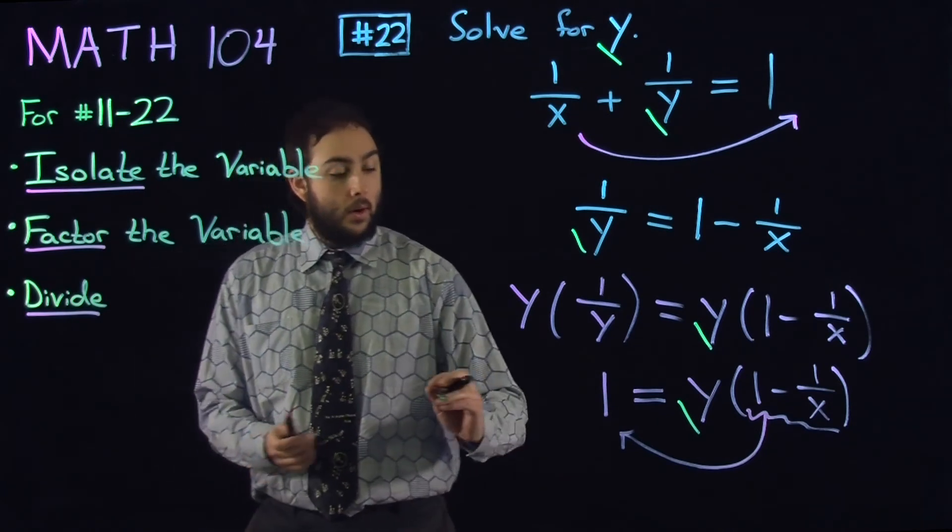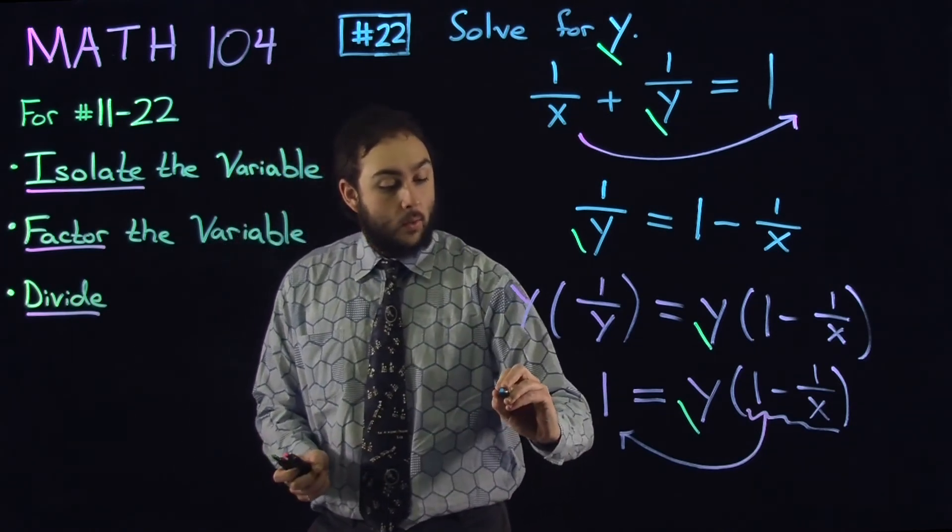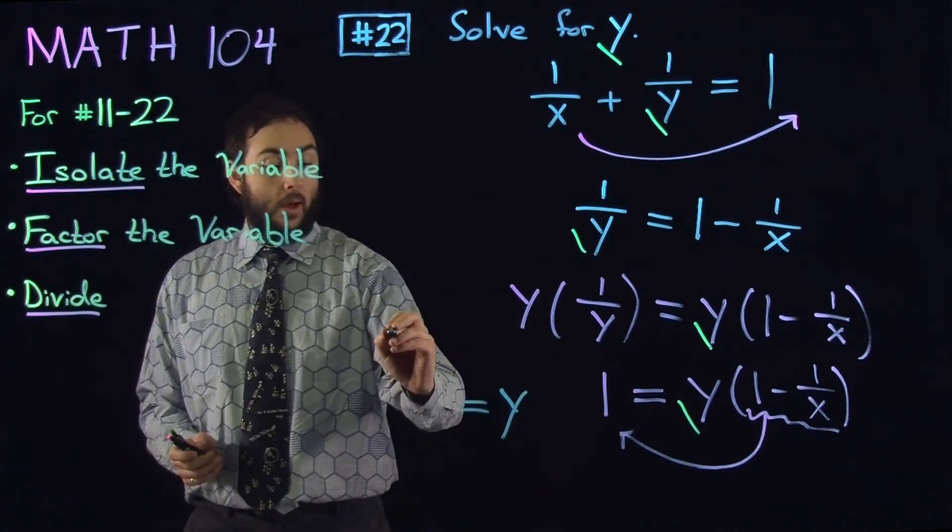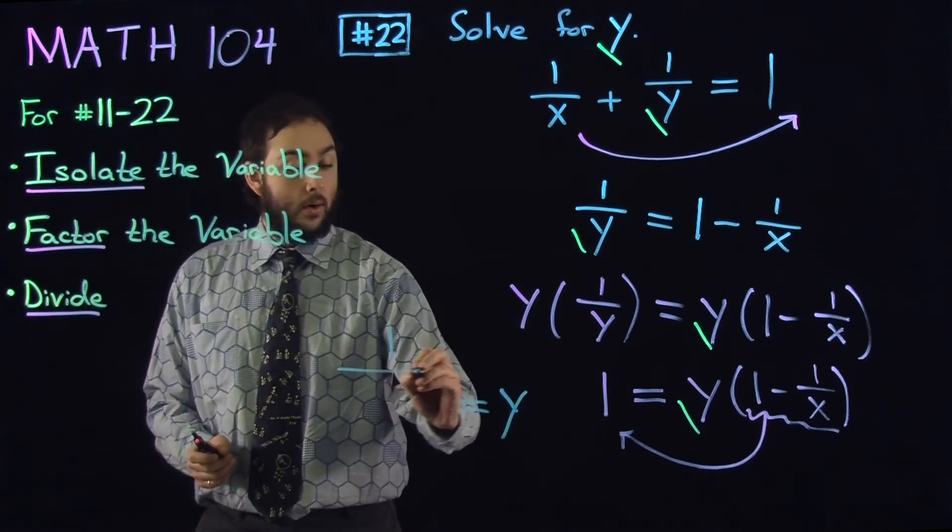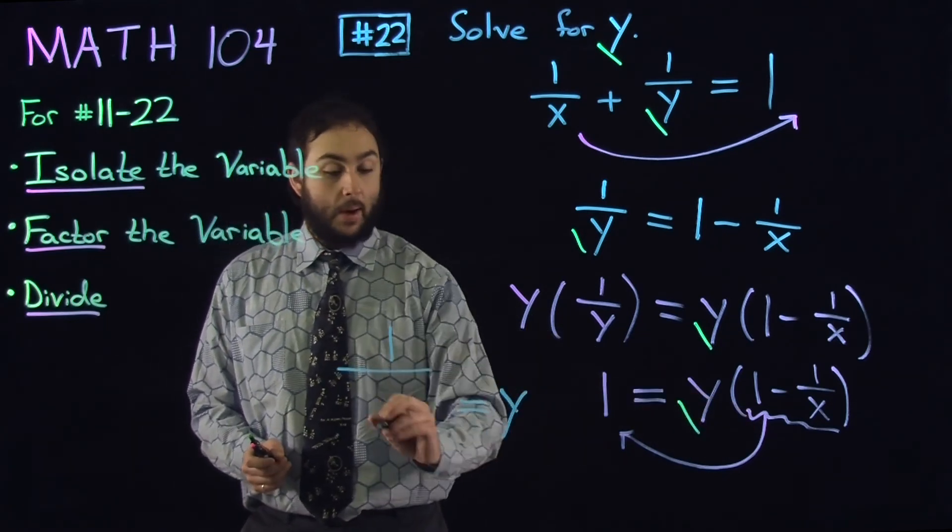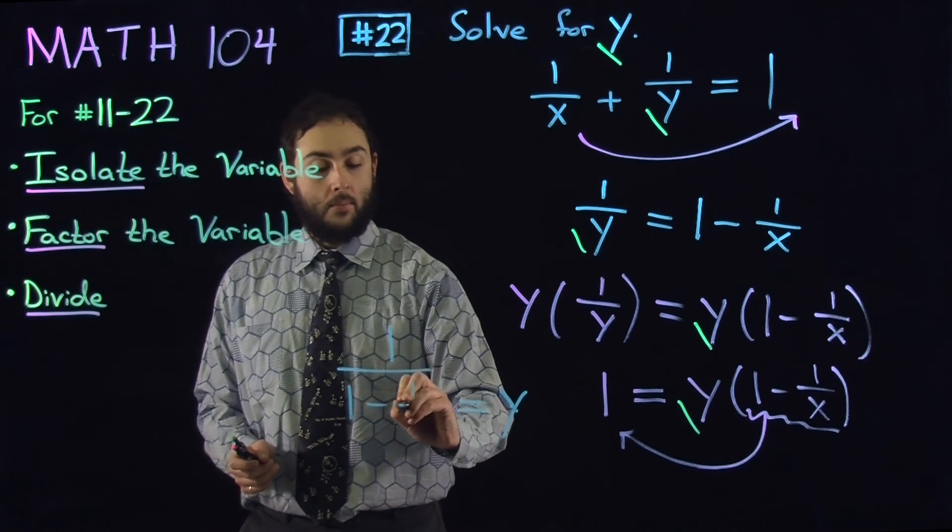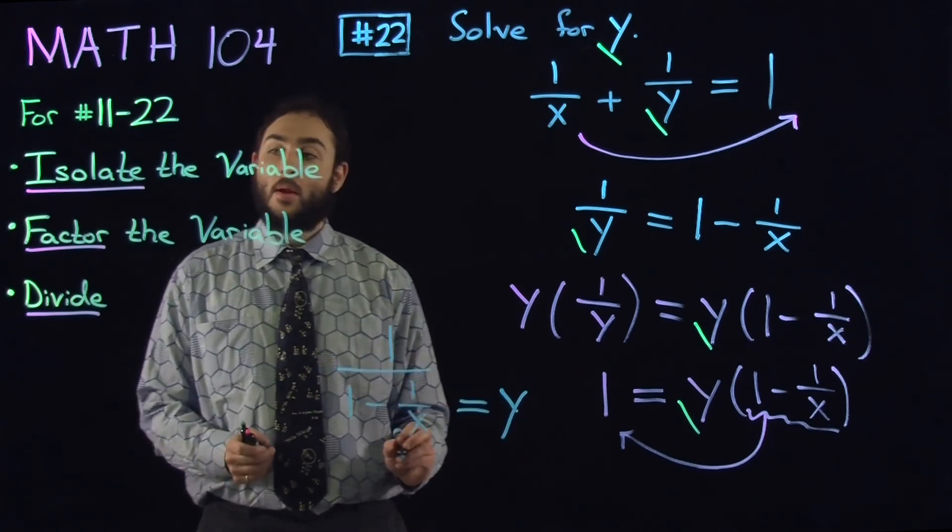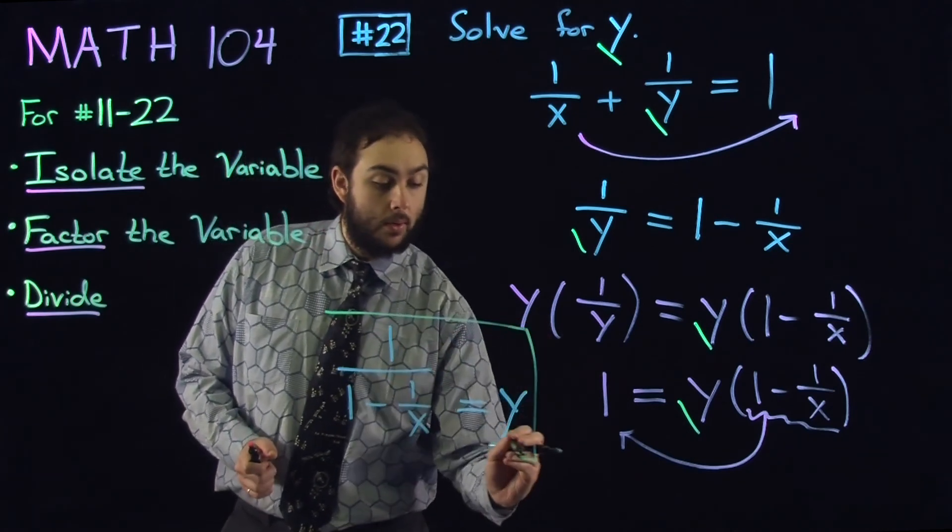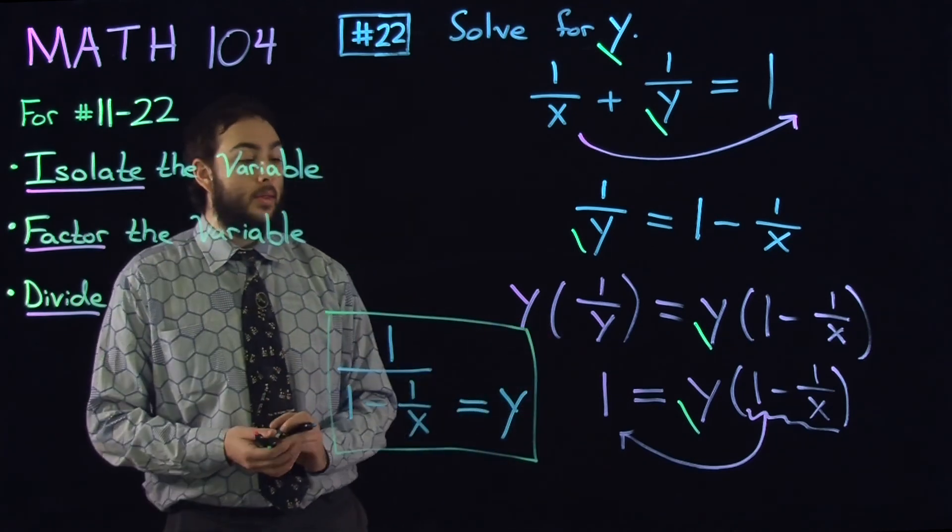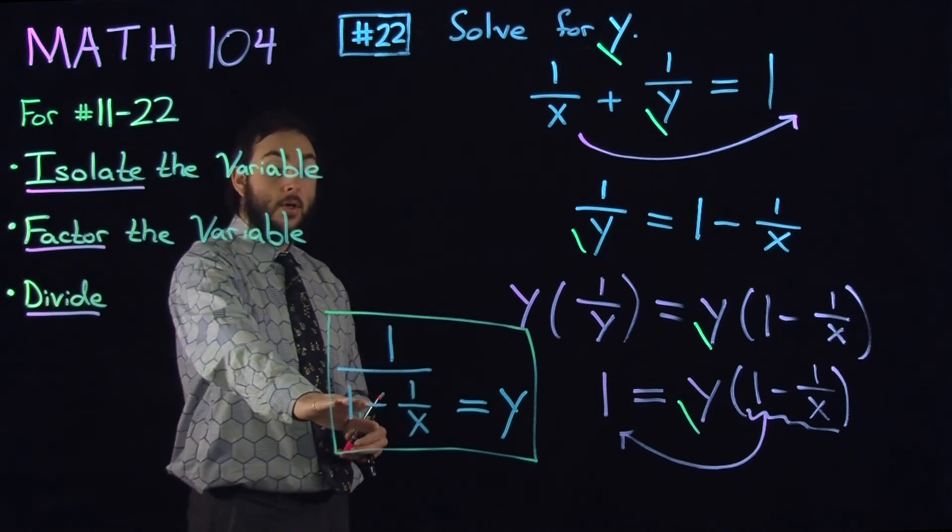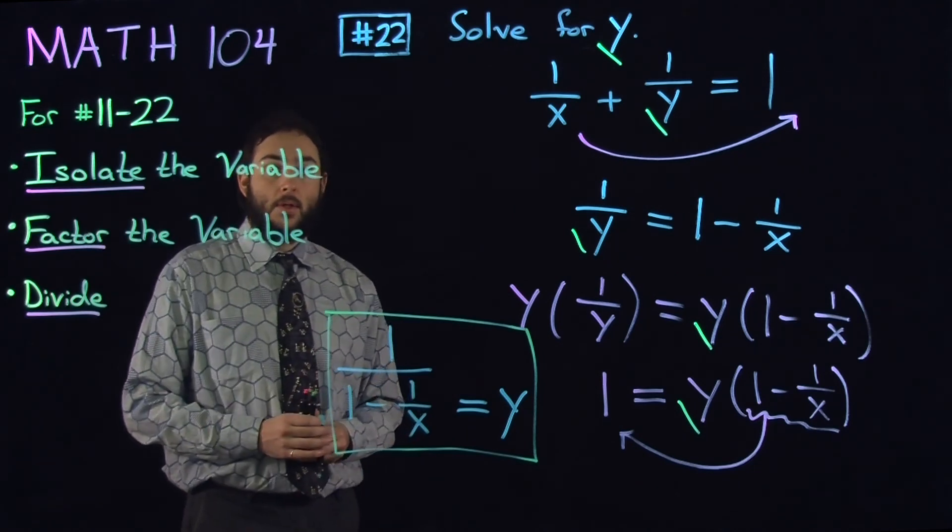And now, on the right, we have y, and on the left, we have 1 in the numerator, and our denominator is simply this term we've divided by. And now we're done, because y appears alone on one side of the equation. And there's no need to simplify. You can enter this exactly as it appears in the gateway exam.